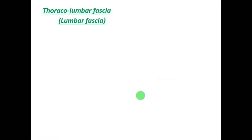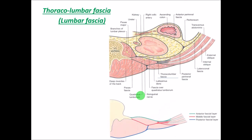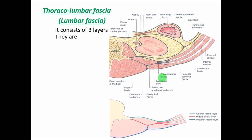The last part is the thoracolumbar fascia, also called the lumbar fascia, which covers these muscles. The fascia covering the psoas major is called the psoas fascia, and the fascia covering the quadratus lumborum is the fascia of the quadratus lumborum. The thoracolumbar fascia is essentially a continuation of these fasciae, covering the back muscles.